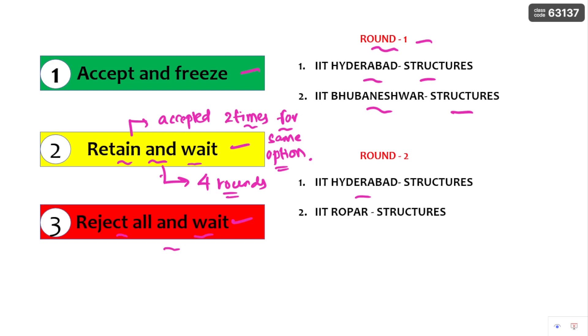You have only two options — that is accept and freeze and reject all and wait. This is the important thing I want to say.